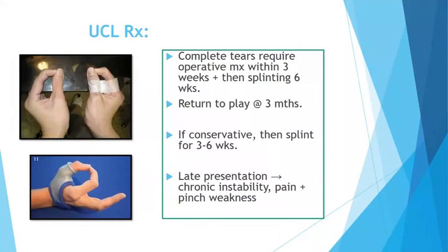Treatment of ulnar collateral ligament injury: if there's a complete tear, it requires an operation within three weeks — the earlier they go to the surgeon, the better. Then splinting for six weeks in a thumb splint. For conservative management with a Grade 1 or 2 injury, the same splint is used for three to six weeks. If there's late presentation with chronic instability, there will be pain and pinch weakness.